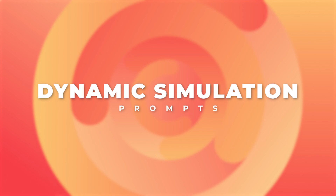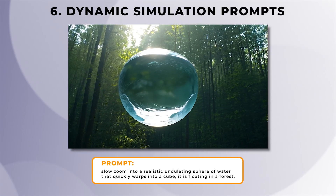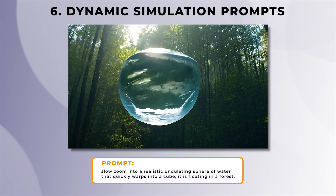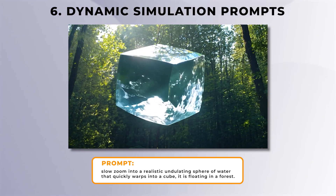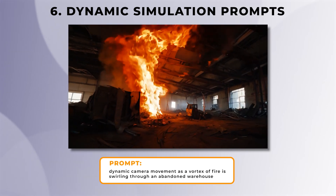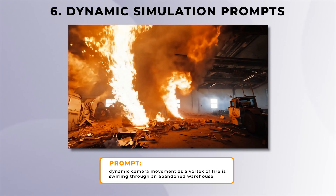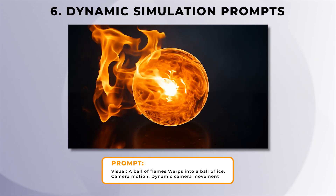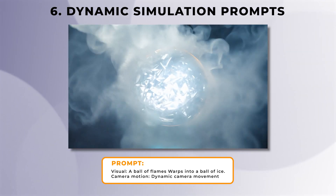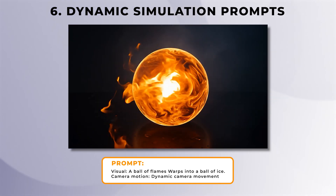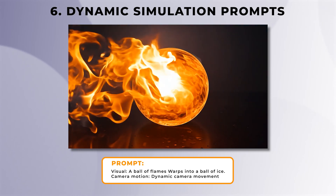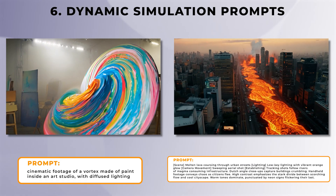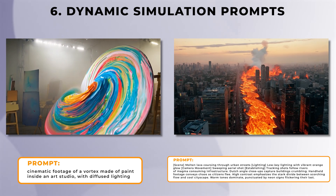Now let's have a look at dynamic simulation prompts. Runway's Gen 3 does an incredible job at creating simulations of different elements. In this prompt, it's an undulating sphere of water that quickly warps into a cube, and the simulation of the water in the sphere and the cube look incredibly realistic. And in this one, it simulates fire in a really natural way — if I saw this on social media, I would not be able to tell it was done by an AI video generator. And this one is incredible: it's a ball of flame that warps into a ball of ice, and the transition from the flames to the ice is really awesome. It adds that kind of dry ice smoke to freeze the ball of flames, and all of the elements are rendered in really high quality. And here's a couple more showcasing the simulations — some paint warping in an art studio, and some lava flowing down a city street.